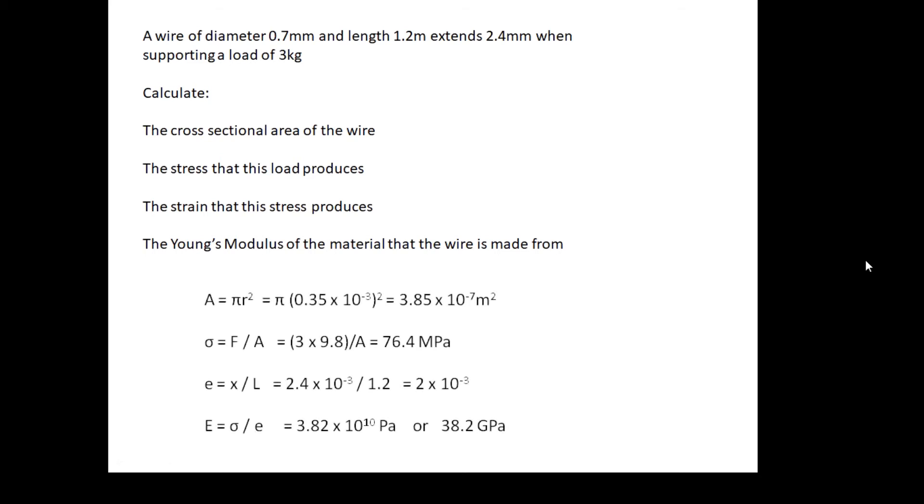There we go. So area equals π r squared. I shouldn't need to tell you: get rid of millimeters as soon as possible. π times 0.35 times 10 to the minus 3 squared. Newtons per meter squared—we do not want newtons per millimeter squared. Get rid of millimeters, centimeters, etc. as soon as possible.